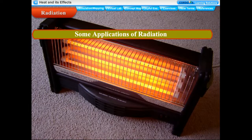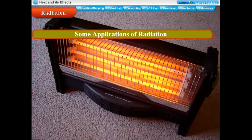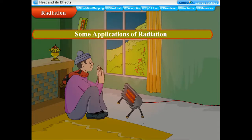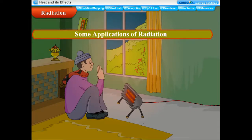Electric room heaters have a curved polished metal reflector behind the heating element. The polished surface reflects back the heat radiation, keeping the person sitting in front of it warm.